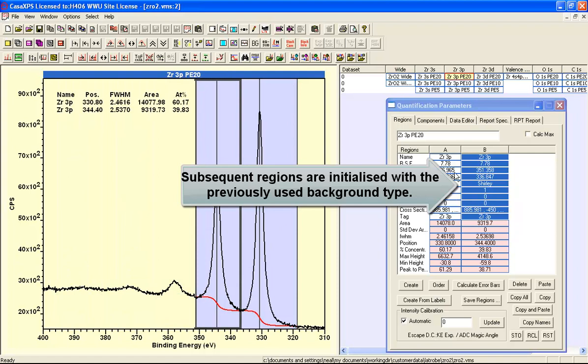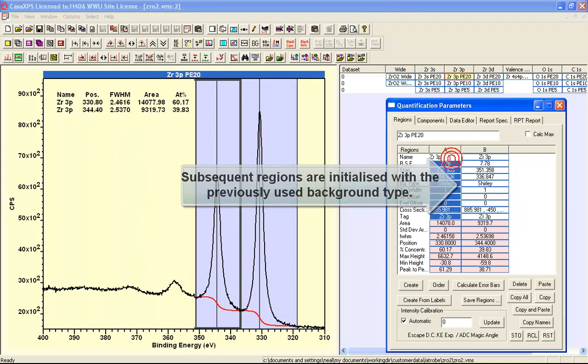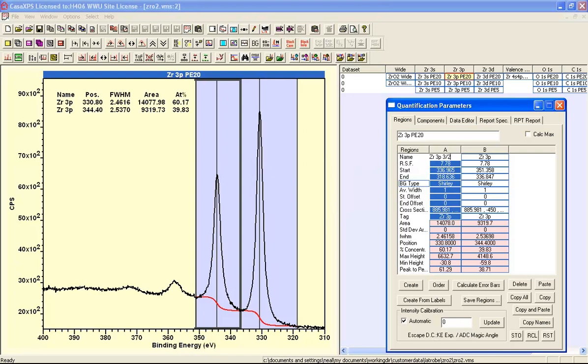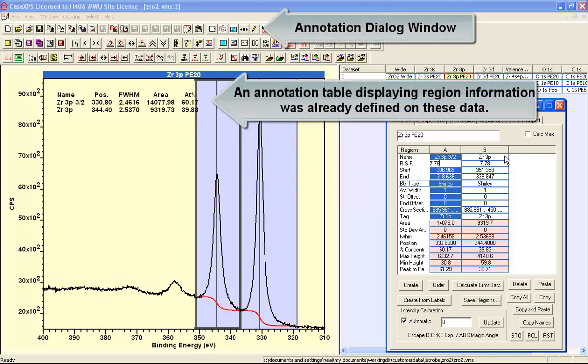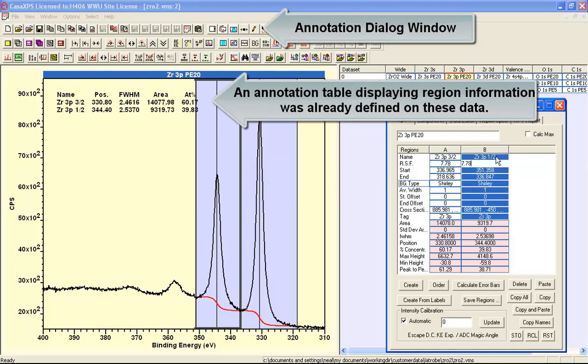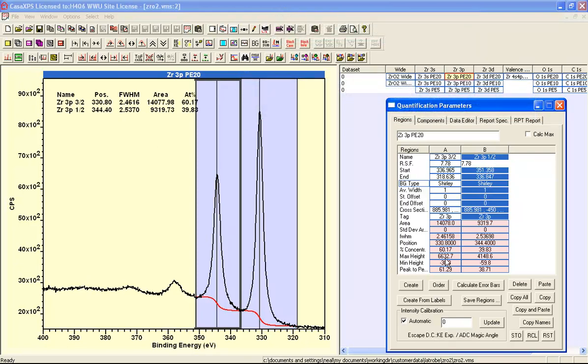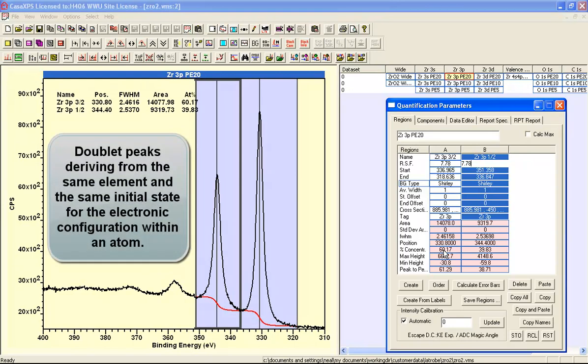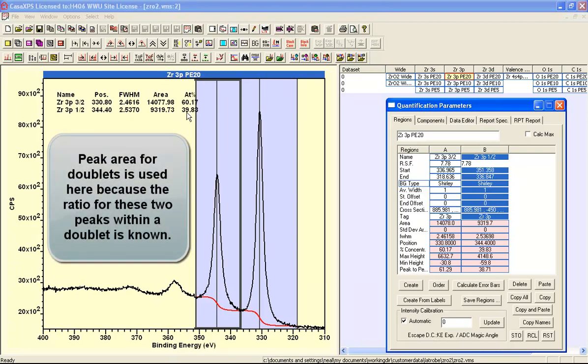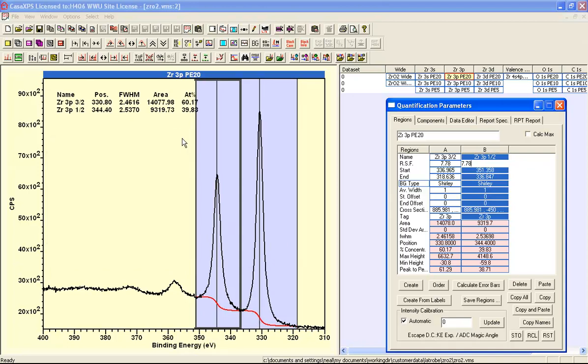So I've got two peaks, one representing the 3 halves and one representing the 1 half peak in this doublet. The ratio that we ought to get for these peaks should be 2 to 1, so we'd expect the area as a percentage to be 66.66 to 33.33. We can see that if we use this Shirley background, we're not getting the expected ratio for this doublet pair.